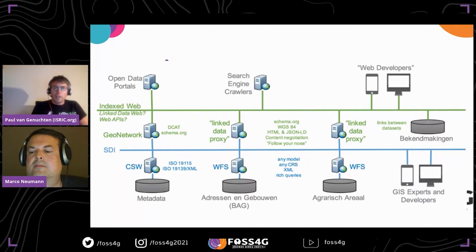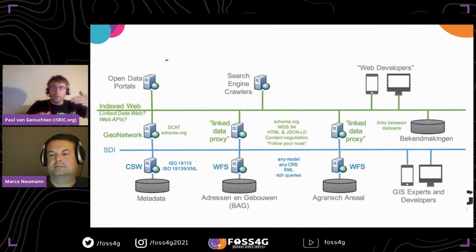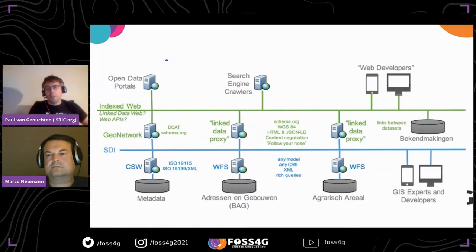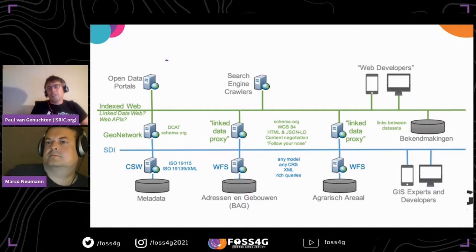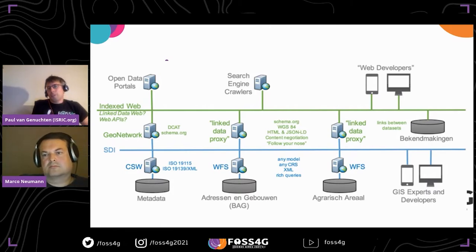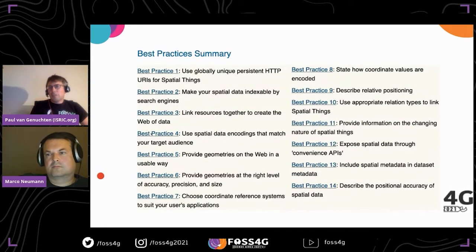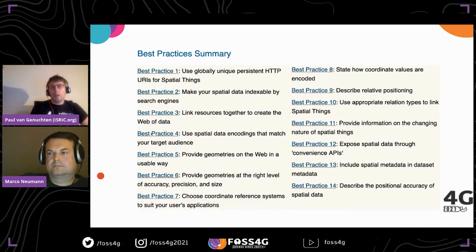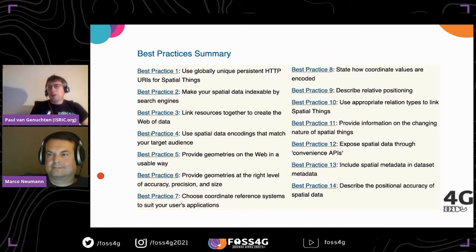That barrier was the trigger to start the OGC Geo on the Web testbed. In the testbed, one of the tests I ran with Clemens and others was creating a proxy layer on top of the typical SDI — WMS and WFS — to provide that data to search engines and web developers. What we learned is that we are quite good at sharing data because we are very standardized, but we do not speak the language of the others, so we need a proxy layer. This was part of the OGC and W3C working group on Spatial Data on the Web, which produced a report with best practices.